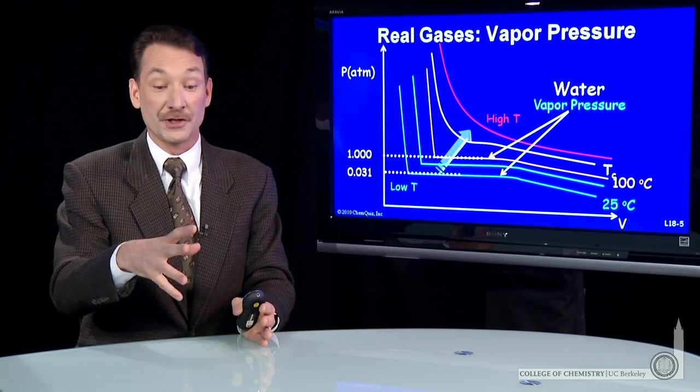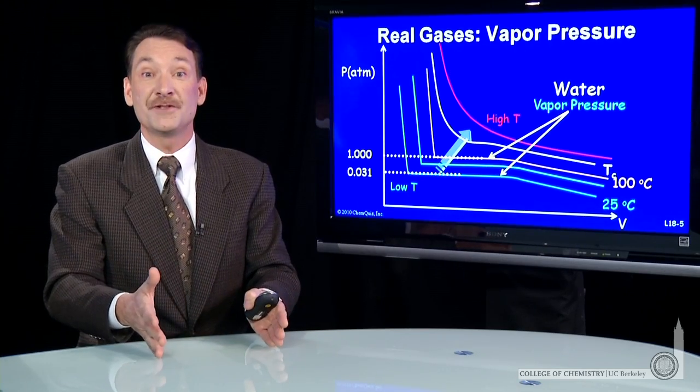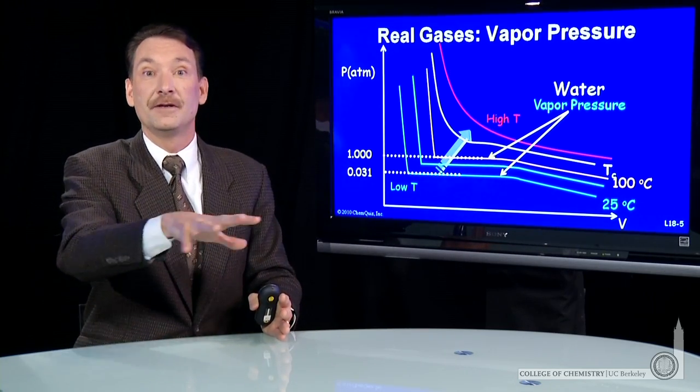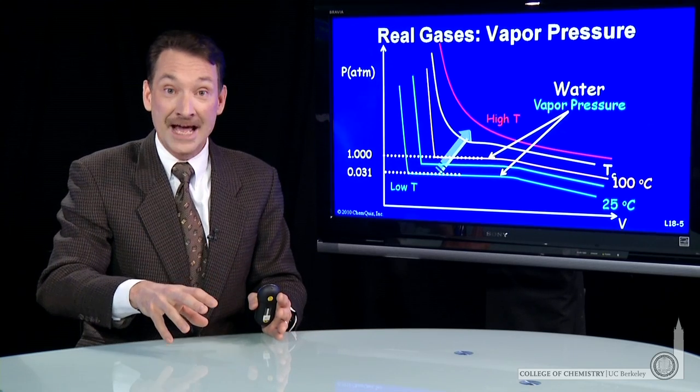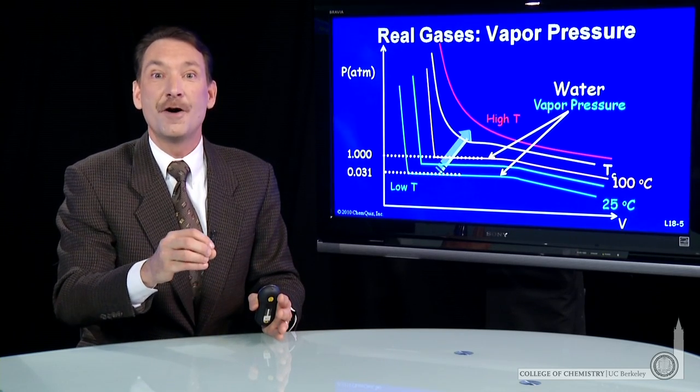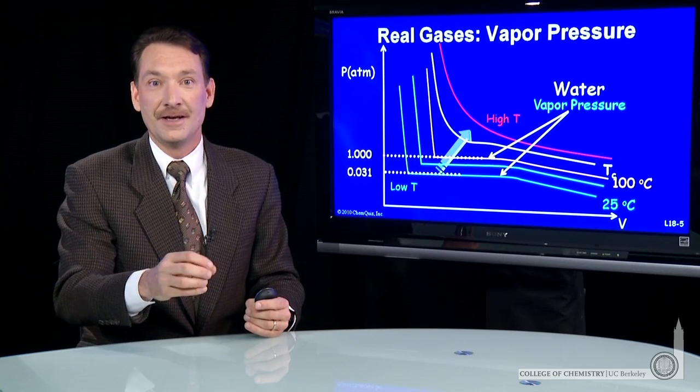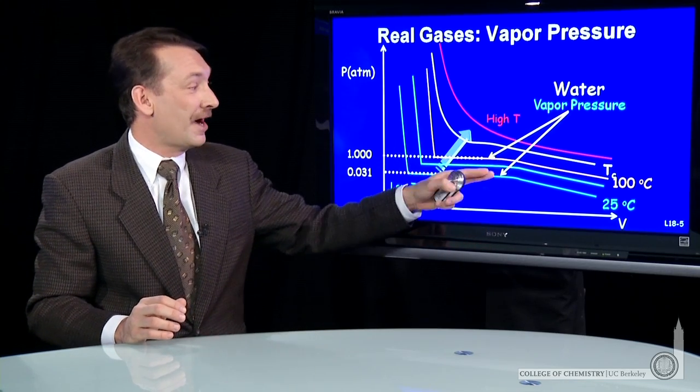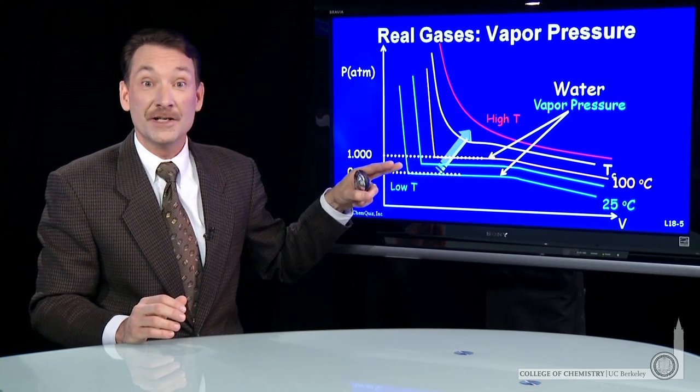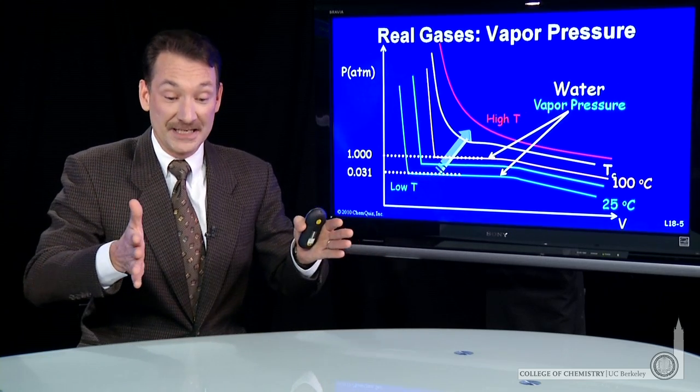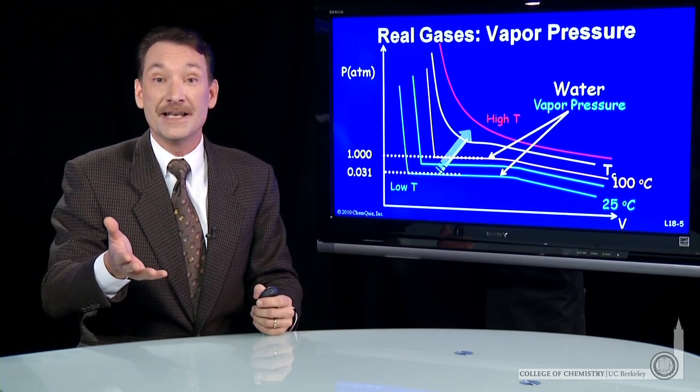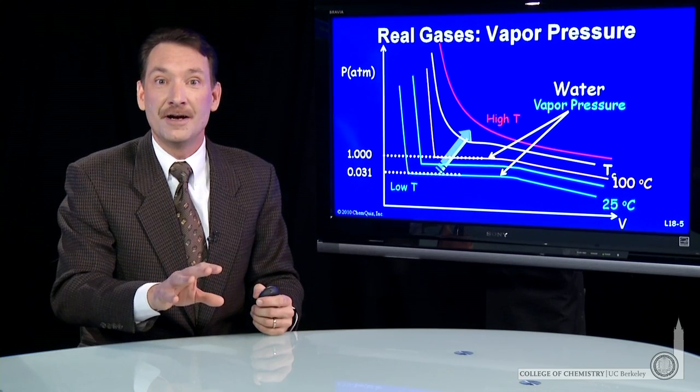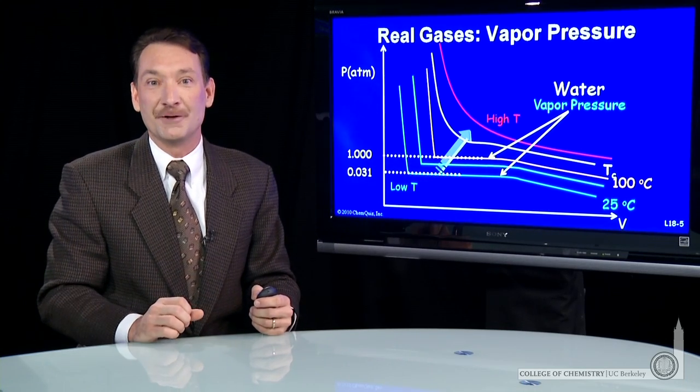So the total pressure, if the sample is open to the atmosphere, you'll have an atmosphere of the atmospheric gases, nitrogen and oxygen, and 0.31 atmosphere of water vapor pressure. So the vapor pressure can be defined as the pressure at which the gas spontaneously condenses for a given temperature, or it can be defined as the partial pressure of the gas above a liquid sample.